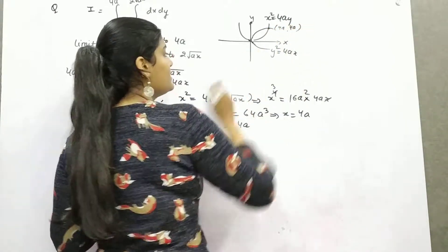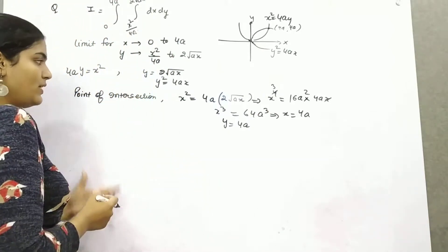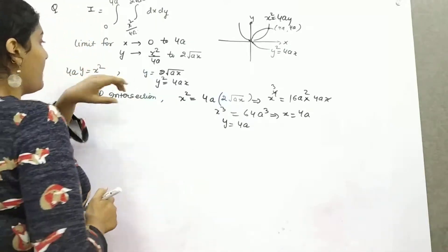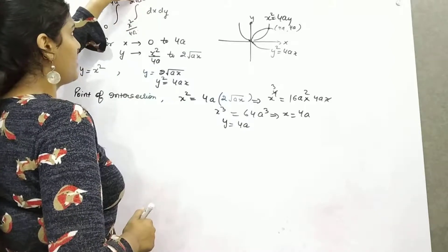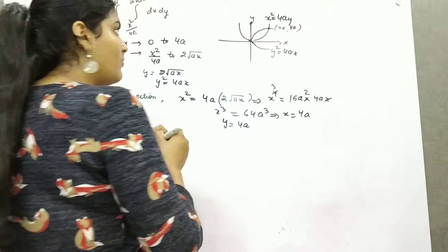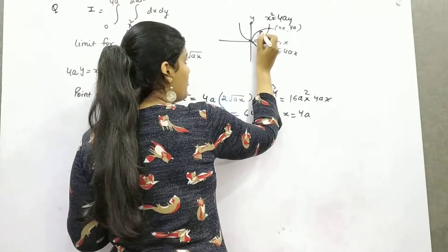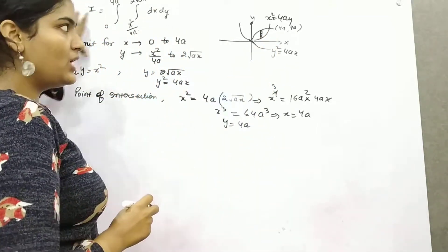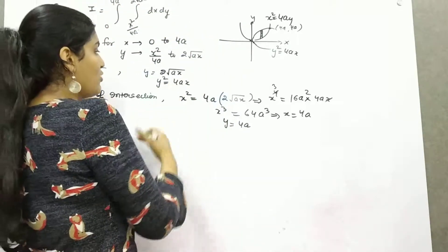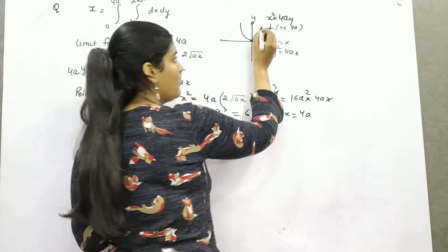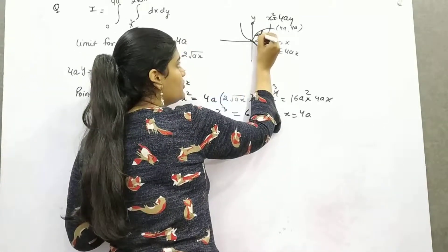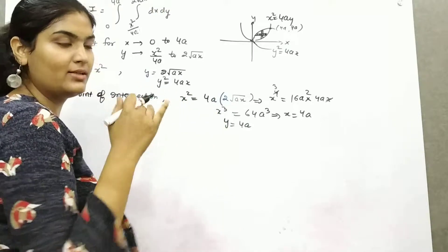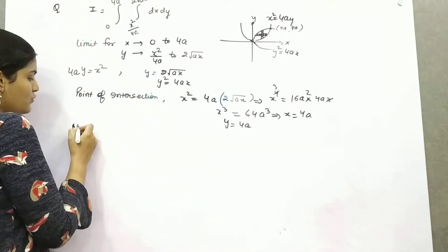Before writing the new limits, we should know in which region the strip lies. The original limit is in terms of x, so the strip is parallel to the y-axis — that is a vertical strip. Since we want to change the order of integration, the new strip should be horizontal. So now we find the new limit for x.